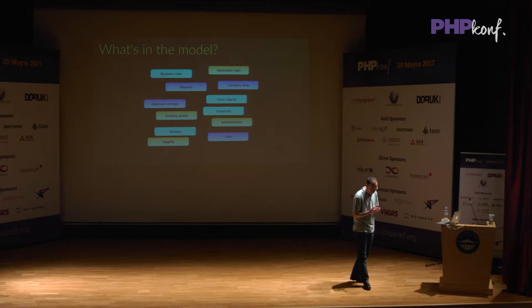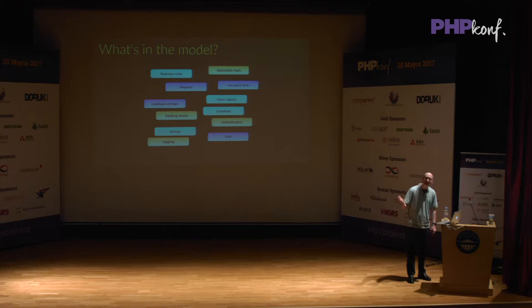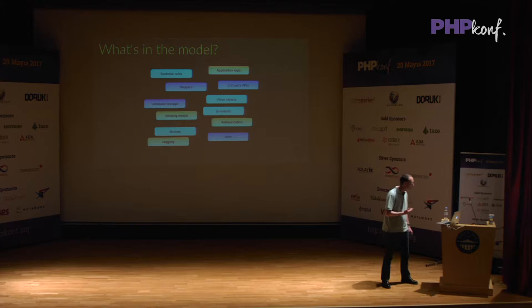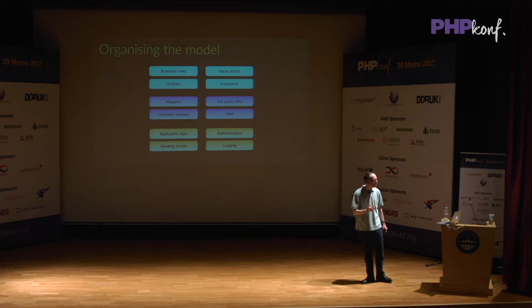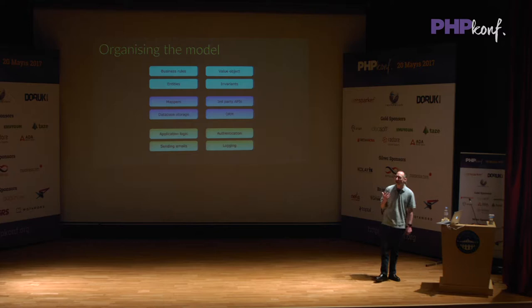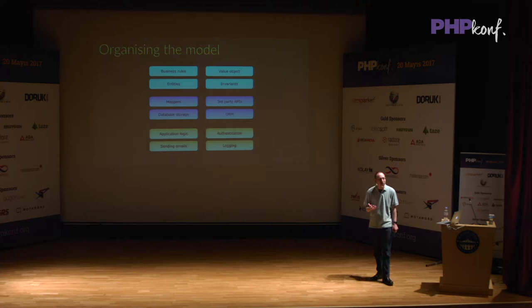That's some theory — let's put this into practice. Here are some things that belong in a model: business rules, validation rules, sending emails, value objects, database storage. We can do something better than that — we can organise it into layers. Things that are common together: authentication, application logic, and sending emails are all the same sort of thing. Business rules, value objects, entities — they're all the same sort of thing. We group these things together into layers and we can talk about them, understand what's going on between them, and avoid coupling between the layers where possible.